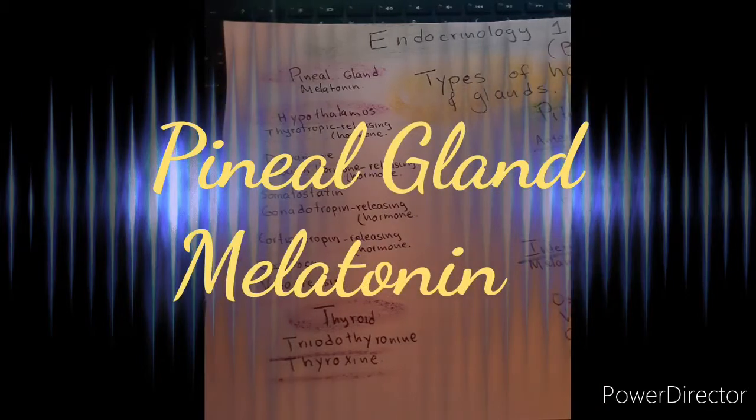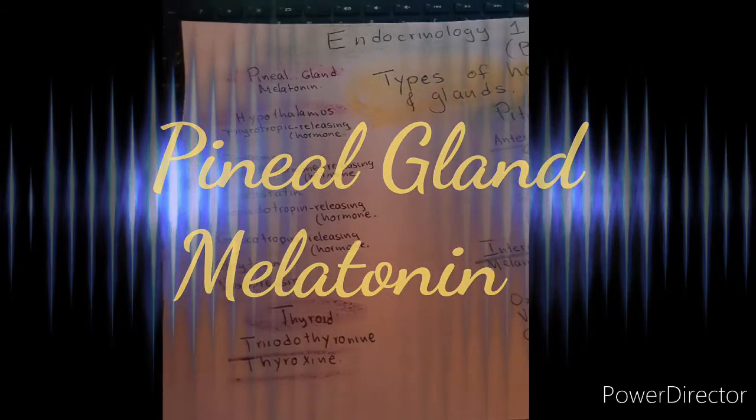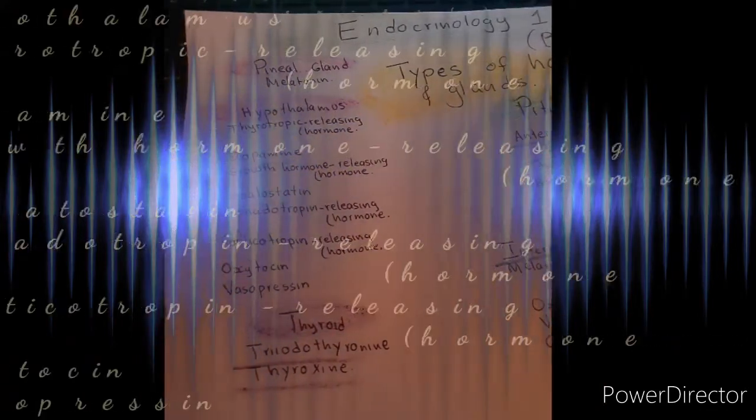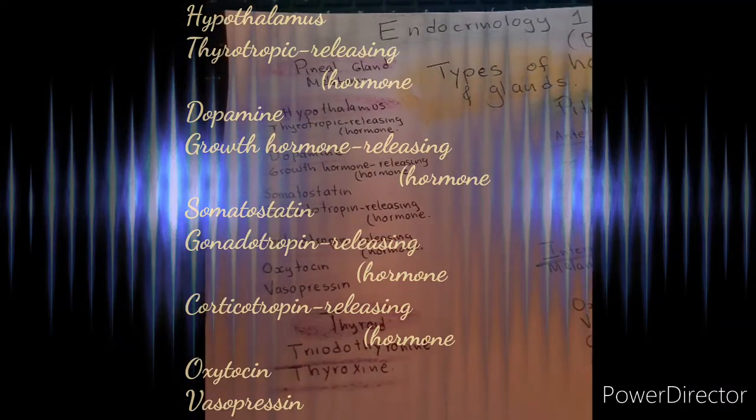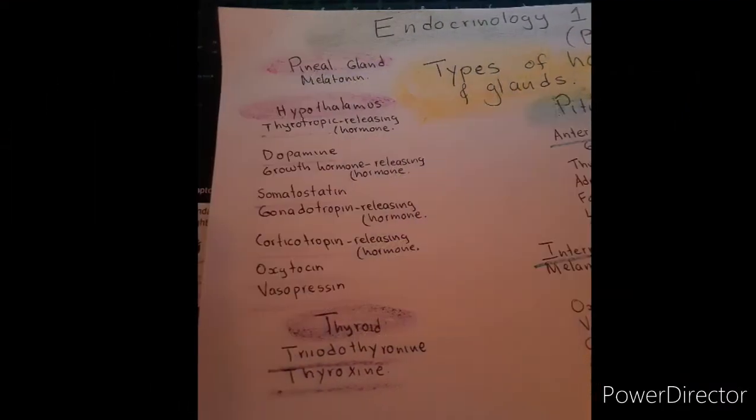On the intermediate pituitary gland, it produces the melanocyte stimulating hormone. On the posterior side, it produces oxytocin, vasopressin, oxytocin stored, and antidiuretic hormone stored.